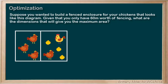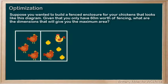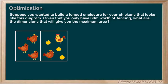The first thing you want to do is draw and label a diagram if possible, especially if the question involves geometry or shapes. Our chicken pen looks like this, and we know that there are two different side lengths that we need to find. Let's label them L for length and W for width.